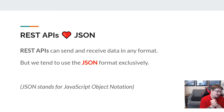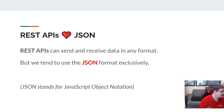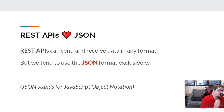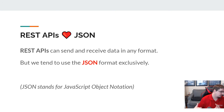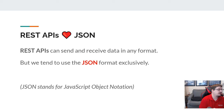REST APIs and JSON are really a match made in heaven. You can write your REST APIs to send and receive any kind of data in any format. Back in the day we used to use XML, but the important part with REST is that you're taking the HTTP routes and verbs and mapping them to CRUD operations. Typically when we're talking about REST APIs nowadays, we're talking about the JSON format exclusively for getting data to endpoints and sending data back.